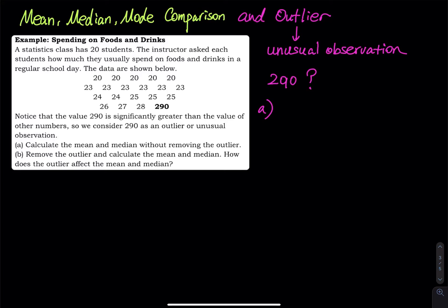So for part A, how do you find the mean? The mean, we add up every number, right? So 20 plus 20 plus 20, and then you keep going until you reach to 28, and then you add the 290. Of course you divide it by 20 students.